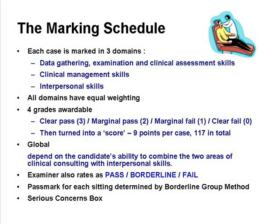On the marking schedule: each case is marked in three domains — data gathering, clinical management, and interpersonal skills. These three domains are split into 16 statements. All domains have equal weighting. There are four grades awardable, ranging from a clear pass scoring three points to a clear fail scoring zero. That gives nine points per case and 117 in total for the circuit. The pass mark for each sitting is determined by the borderline group method and is available on your ePortfolio once results are published.